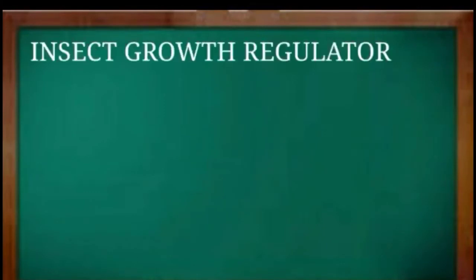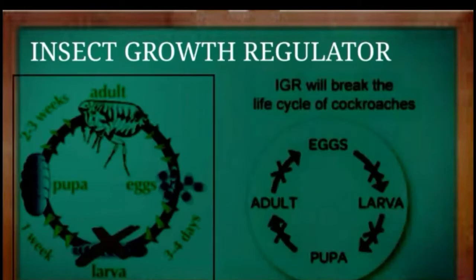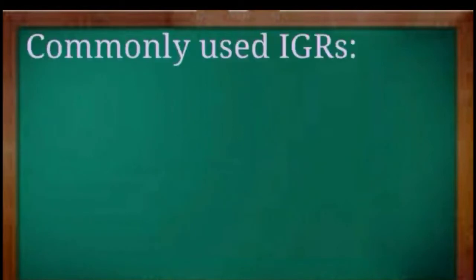Now it is easy for us to understand insect growth regulators. We can define insect growth regulators as insecticides that mimic juvenile hormone in young insects, which disrupts their growth and reproduction. In the simplest way, these insect growth regulators are man-made chemicals whose structure is almost similar to that of the juvenile hormone found in young insects, which is responsible for their growth. These insect growth regulators interfere with the natural juvenile hormone of young cockroaches and disrupt their growth as well as reproduction.